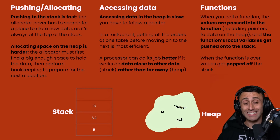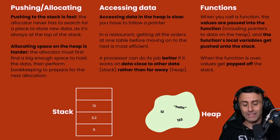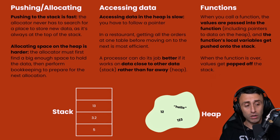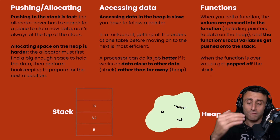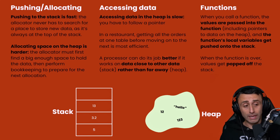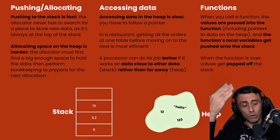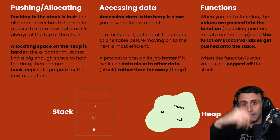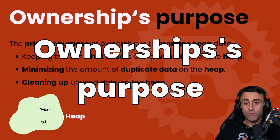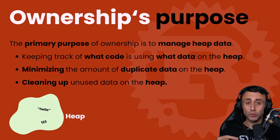About functions — when we call a function in Rust, the values passed into the function, including any pointers, and the function's local variables are pushed onto the stack. Functions work primarily with the stack but can have pointers that point to the heap. When the function is over and goes out of scope, the values of the function get popped off the stack.